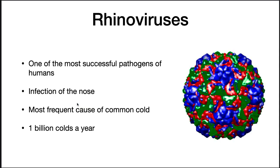Okay, rhinoviruses. The rhinovirus is one of the most successful pathogens of humans. It causes infections of the nose and is the most frequent cause of what we call the common cold. There are an estimated 1 billion colds a year worldwide, meaning about 18 to 20% of the population is getting a cold every year. So this is an important disease just by a loss of productivity.